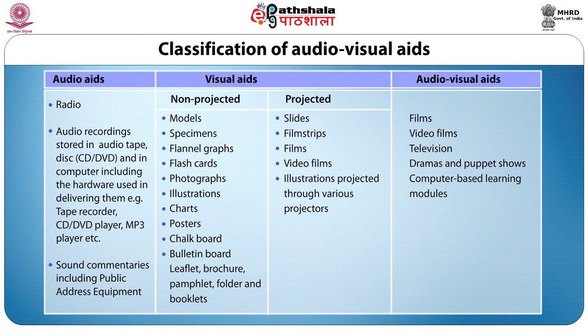Various audio-visual aids are classified into three categories as given in the table: audio aids — radio, audio recordings stored on CD or DVD; visual aids — non-projected aids such as models, specimens, flannel graphs and photographs, and projected aids such as film strips and slide projectors; and audio-visual aids which combine both audio and visual forms, like motion pictures, video films, computer-based multimedia learning modules, dramas and puppet shows.